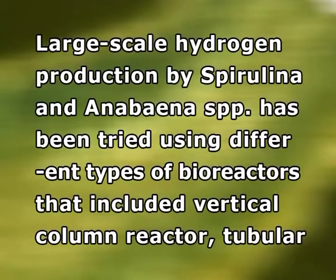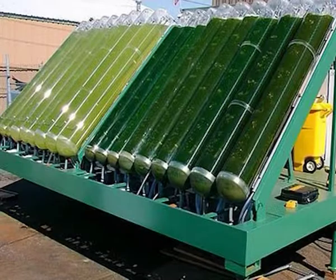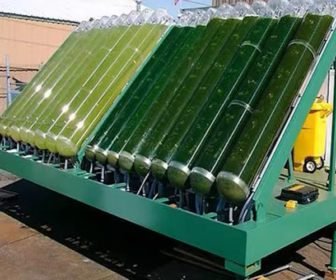Large-scale hydrogen production by Spirulina and Anabaena species has been tried using different types of bioreactors including the vertical column reactor, the tubular type and flat panel photobioreactor. These reactors were designed to make use of solar light for illumination, to maximize the area for incident light, and to allow sterilization and hydrogen collection with convenience and ease. The reactors are subjected to continuous modification in order to increase their productivity and to decrease costs of maintenance and production. Increased production of hydrogen was also achieved by genetically modifying the nitrogenase enzyme in hydrogen-producing strains.